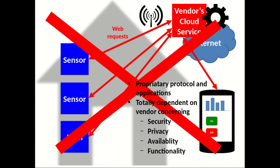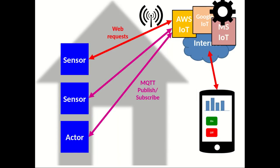Everything is routed through the vendor's proprietary cloud APIs, and the application is dependent on that - including all features of security, privacy, availability, and functionality. What we actually want is a more open solution, where you have sensors and actors communicating via open protocols, for example the MQTT publisher-subscriber protocol, to some services in the internet that might be hosted on several cloud solutions from different vendors.